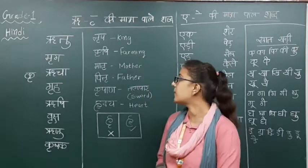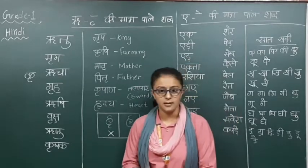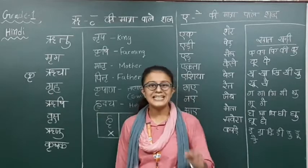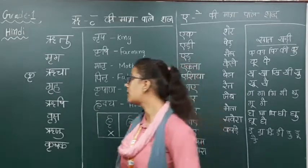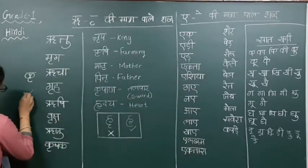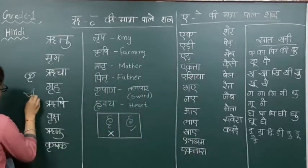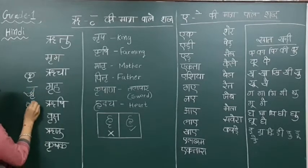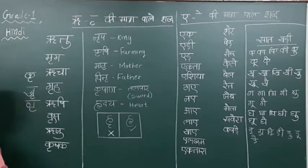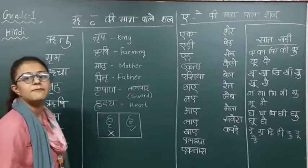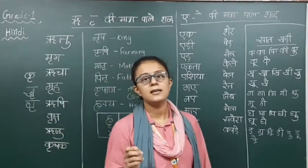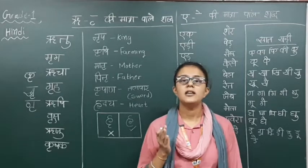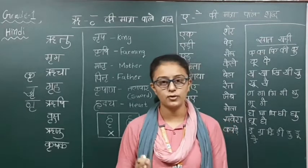So now we are going to learn how to pronounce it. Kar ke saath ri — kri. Kar ke saath ri ki matra — toh kri. Kar ke saath ri ki matra — toh gri. Vyanjan ke pichhe ri lagate hi, ri ki matra ka usage hota hai.